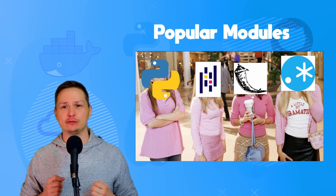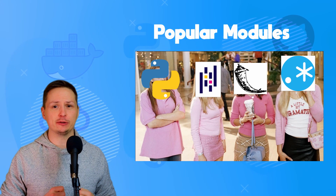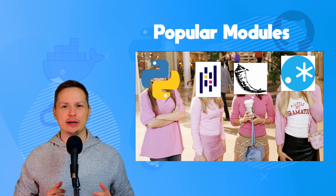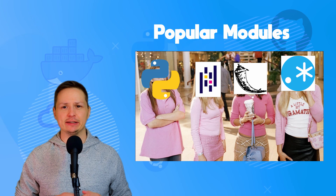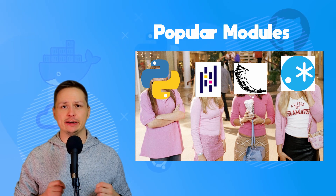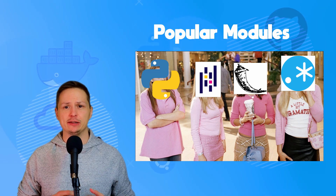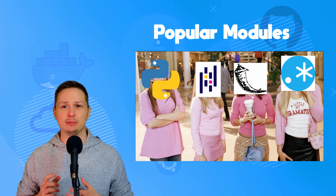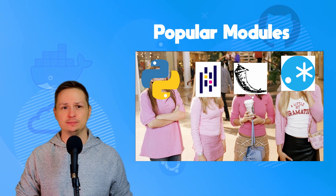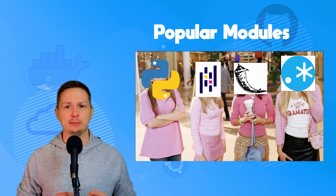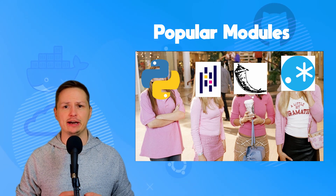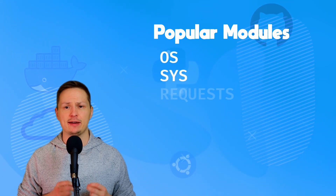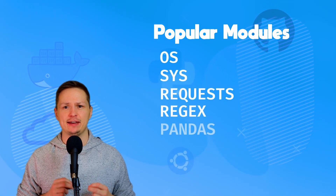Level four: start familiarizing yourself with popular Python modules. No matter what your code does, there's likely a Python module that can help. It's a terrible feeling to spend hours writing code only to find a module could have solved it. The popular modules I recommend every Python engineer know are: os, sys, requests, regex, pandas, and logging.